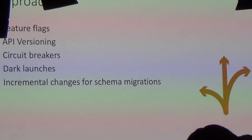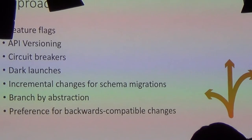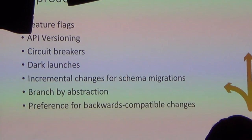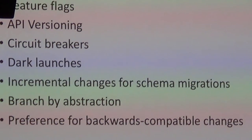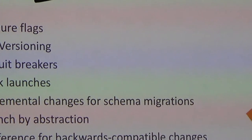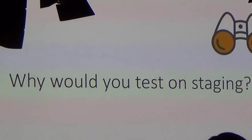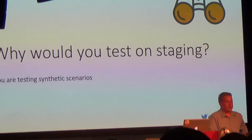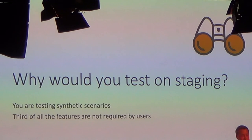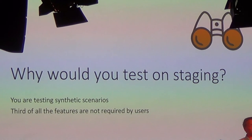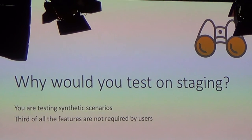Some approaches to achieve this: feature flags, API versioning, circuit breakers, dark launches, incremental changes for schemas, branch by abstraction, preferences to black-box, comparable changes. I don't have time to get into all of those, but you can find a lot of information on the internet. But then again, why would you need to test on staging? This is using synthetic scenarios.